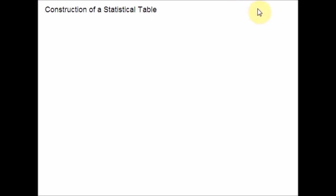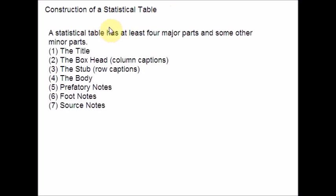Now let us see what are the major parts and minor parts. A statistical table has at least four major parts and some other minor parts. Let me list them out: title, box head — that is the column captions — the stub, which is nothing but row captions, the body, prefatory notes, footnotes, and source notes. These are the major and minor parts.